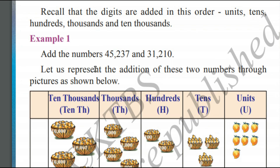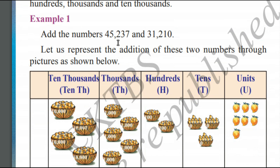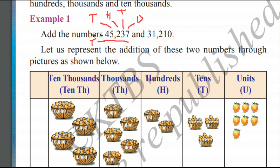Let us see example 1. We need to add 45,237 and 31,210. We can represent 45,237 as: 7 is in the units place, 3 is in the tens place, 2 is in the hundreds place, 5 is in the thousands place, and 4 is in the ten-thousands place. We already saw this in the previous chapter.